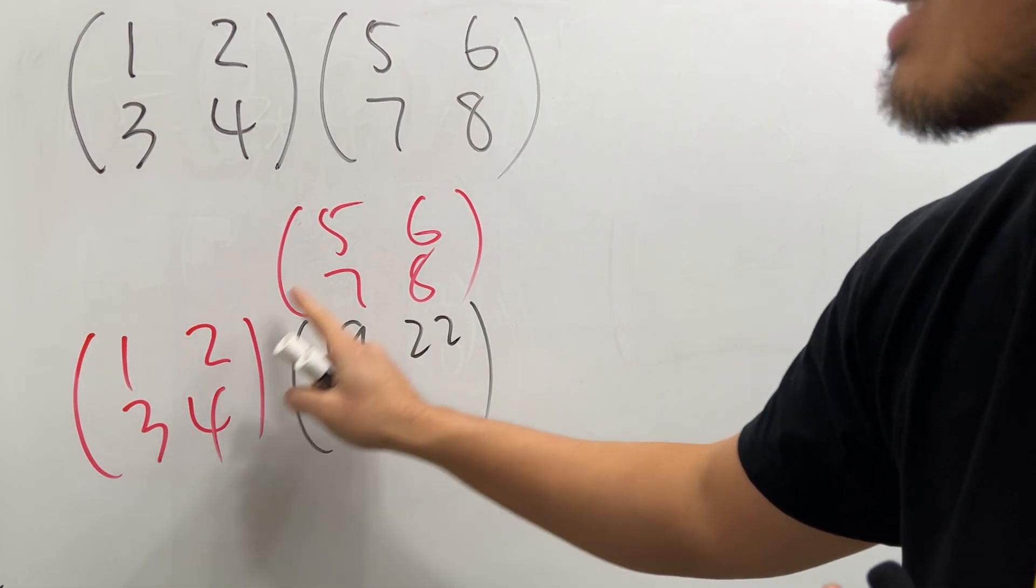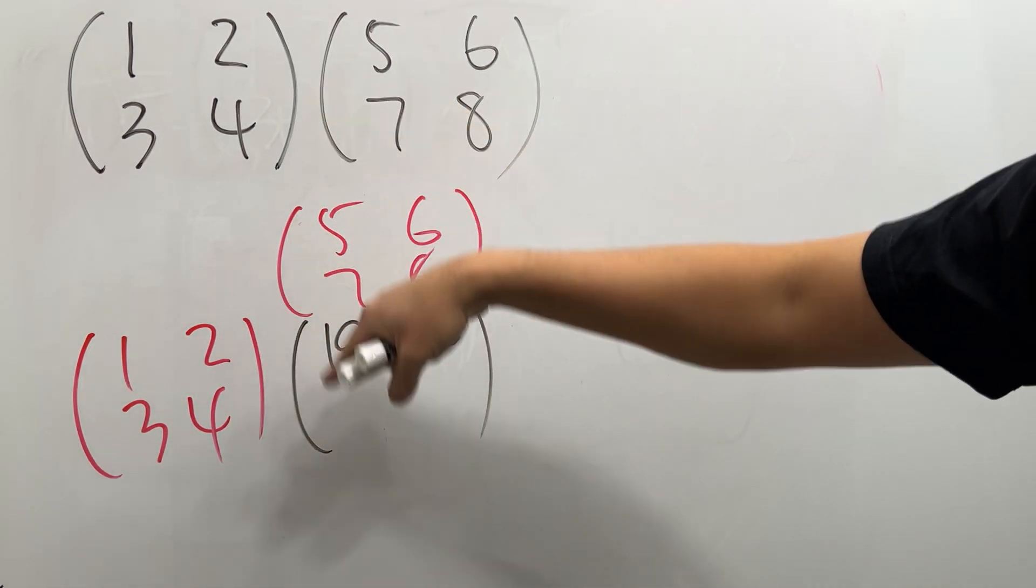And then next, you continue. This times this is 15, this times this is 28. Together you get 43.